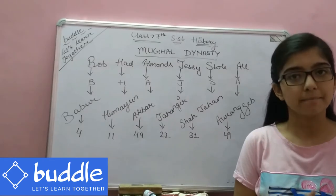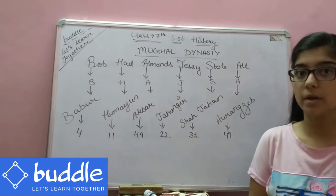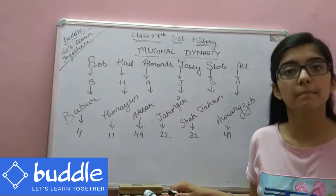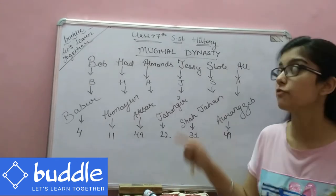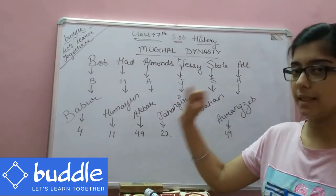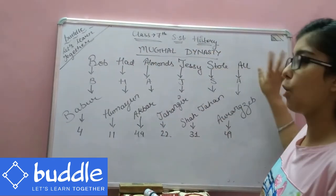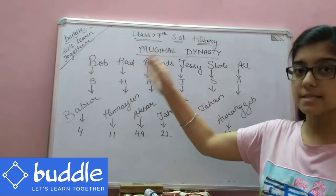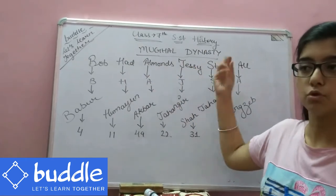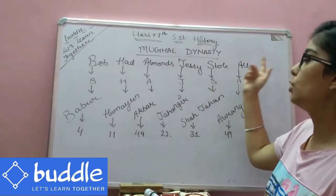Hello everyone, I am Meg Bhatia and today I am going to explain a simple trick to remember the names of all the rulers of the Mughal dynasty. First, we need to remember the simple line: 'Bob had almonds, Jessie stole all.'